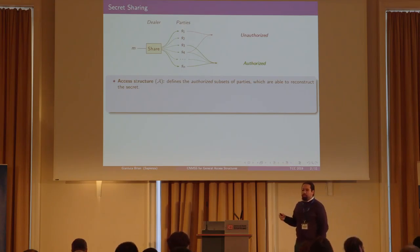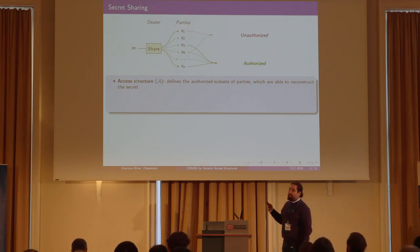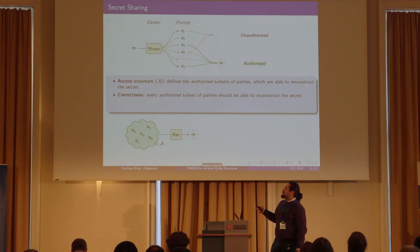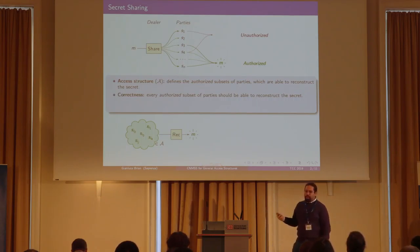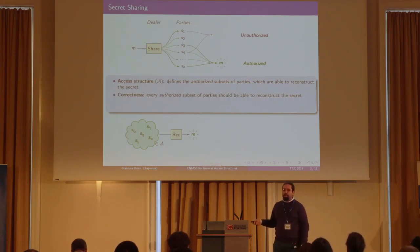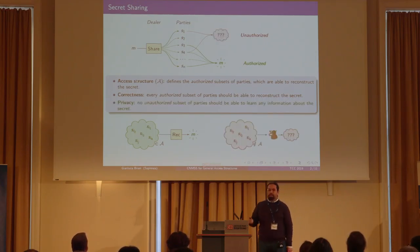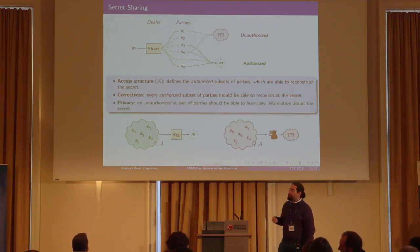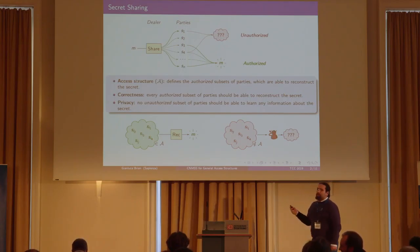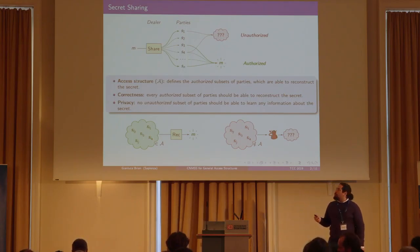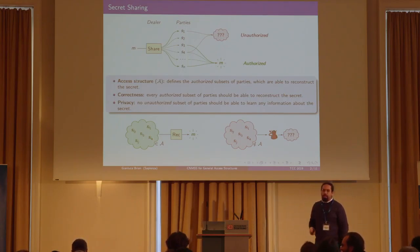In secret sharing, we have two properties: the correctness property, which states that every authorized subset of parties can fully reconstruct the message, and the privacy property, which states that no unauthorized subset of parties can obtain any information about the underlying secret.